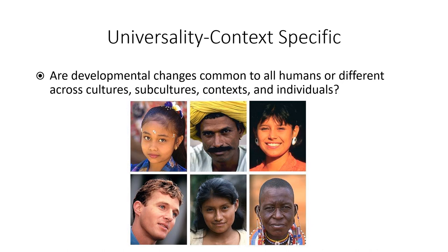The final developmental issue is universality versus context specificity. The question is: are developmental changes common to all humans, or are they different across cultures, subcultures, contexts, and individuals? Sticking with the theme, it's actually both. There are human universals — for example, the basic emotions and their corresponding facial expressions are found in all typical humans across all cultures. However, there are cross-cultural differences, such as when you express those emotions. That pattern holds for many different traits: there are universals, but also cross-cultural differences.